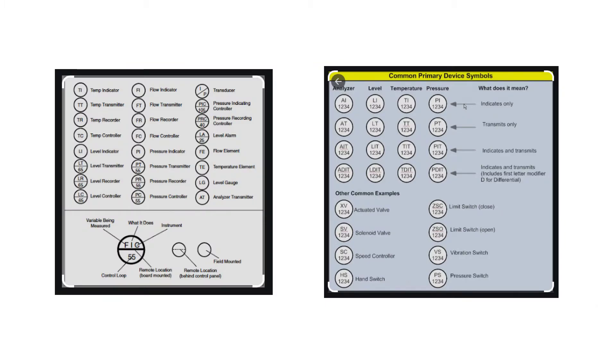Here we have the different type of tags that you'll see on a P&ID. One thing to keep in mind: if you see a horizontal line through the tag, through the round circle, that means it's a remote location. Board mounted is a solid horizontal line. Remote location with the dashed line is behind a control panel.